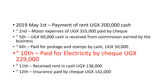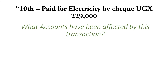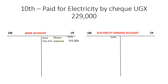On the 10th, paid electricity by check, 229,000 Uganda shillings. Since the transaction was done using a check, the amount of money in the bank has reduced. The accounts affected are the bank account reducing and the electricity expense account increasing. Decreases in assets are credited, so we credit the bank account by 229,000. The other item affected is electricity, and this took place on the 10th of May. We complete our double entry by debiting the electricity expense account by 229,000. The other item affected is bank, and this took place on the 10th.